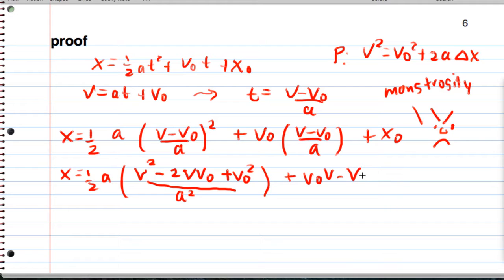Plus v naught v minus v naught squared, all that over a, plus x naught. Oh my goodness, this is just hideous. So here we go. x equals, are you ready? Here we go. So we have v squared minus 2v v naught plus v naught squared, all that over 2a.